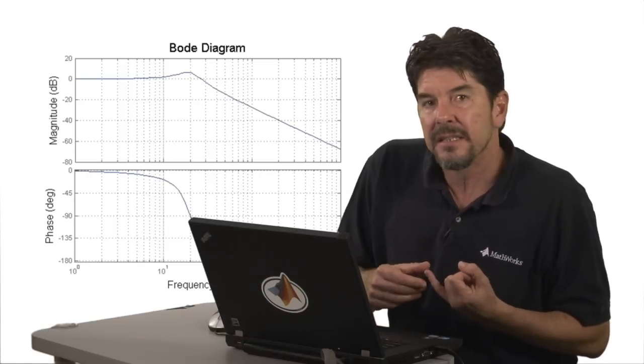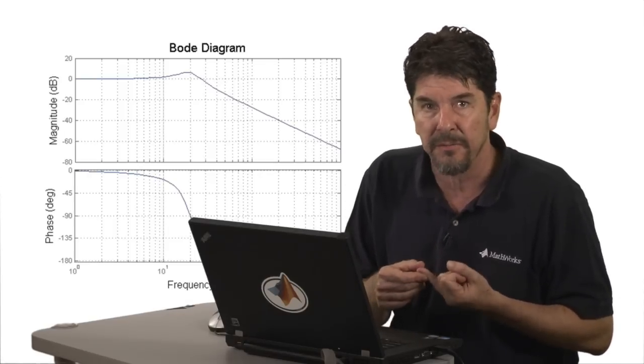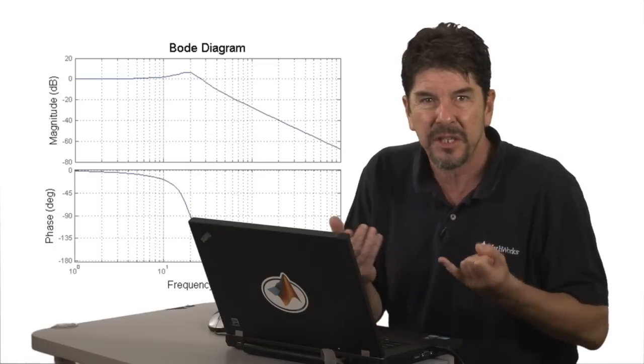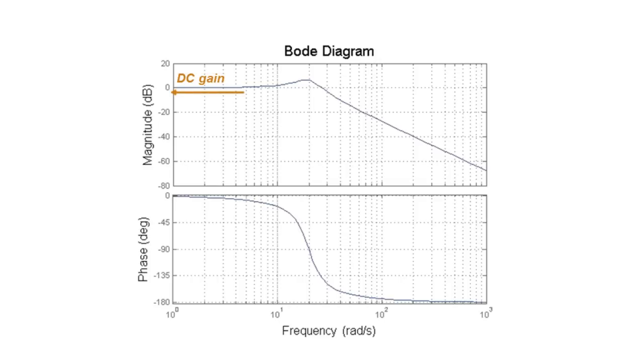Before I proceed, I want to define at least some of the standard terminology we will be using for describing the characteristics of a frequency response plot, just to make sure that we are all on the same page. First, when we talk about DC gain, we are referring to the magnitude gain at zero frequency, or DC.